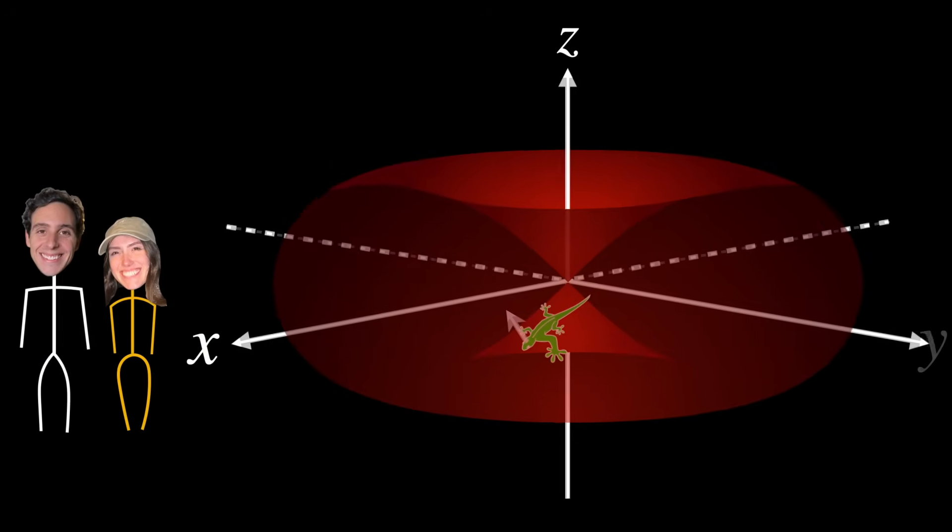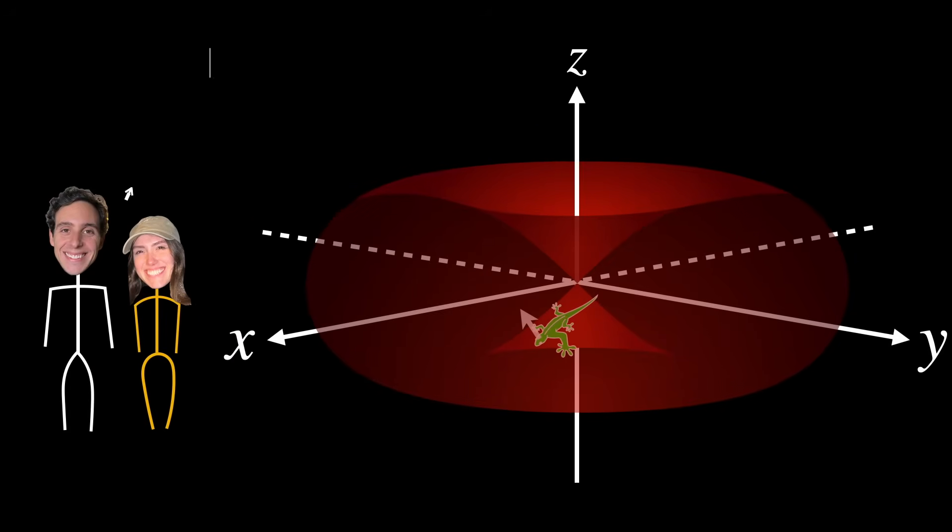This other side is what we, observing the scene in three dimensions, would call the surface's inside. Of course, there's no inside or outside from the perspective of the lizard because it's two-dimensional. For it, the surface is not necessarily embedded in a higher-dimensional space.